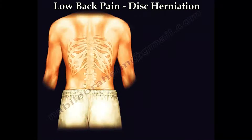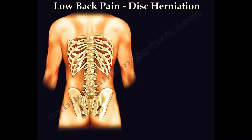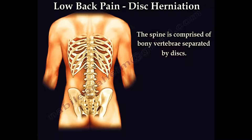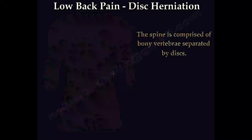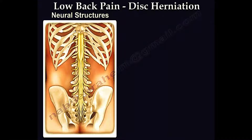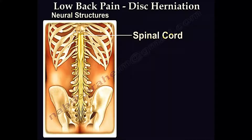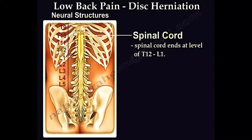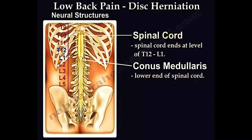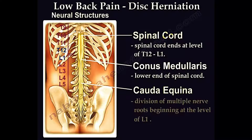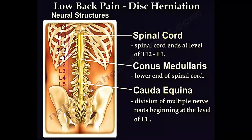This is a low back pain disc herniation video. The spine has bony vertebrae separated by discs. The neural structures include the spinal cord, which ends at the level of T12-L1, the conus medullaris which is the end of the spinal cord, and the cauda equina which is a collection of nerve roots that usually begins at the level of L1.